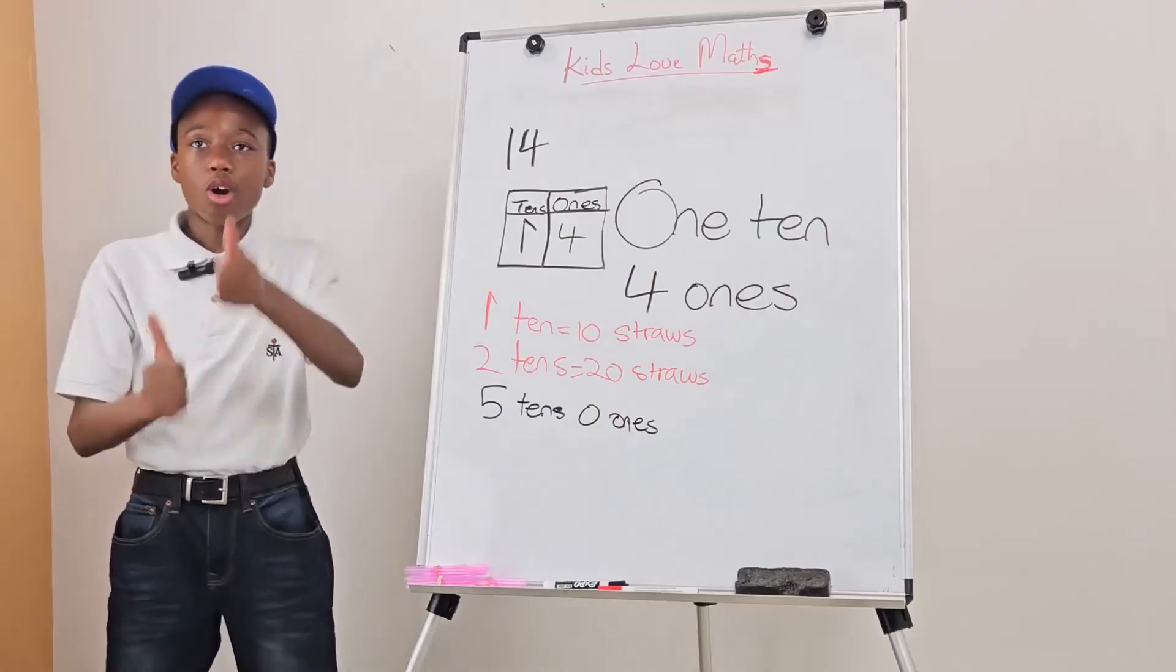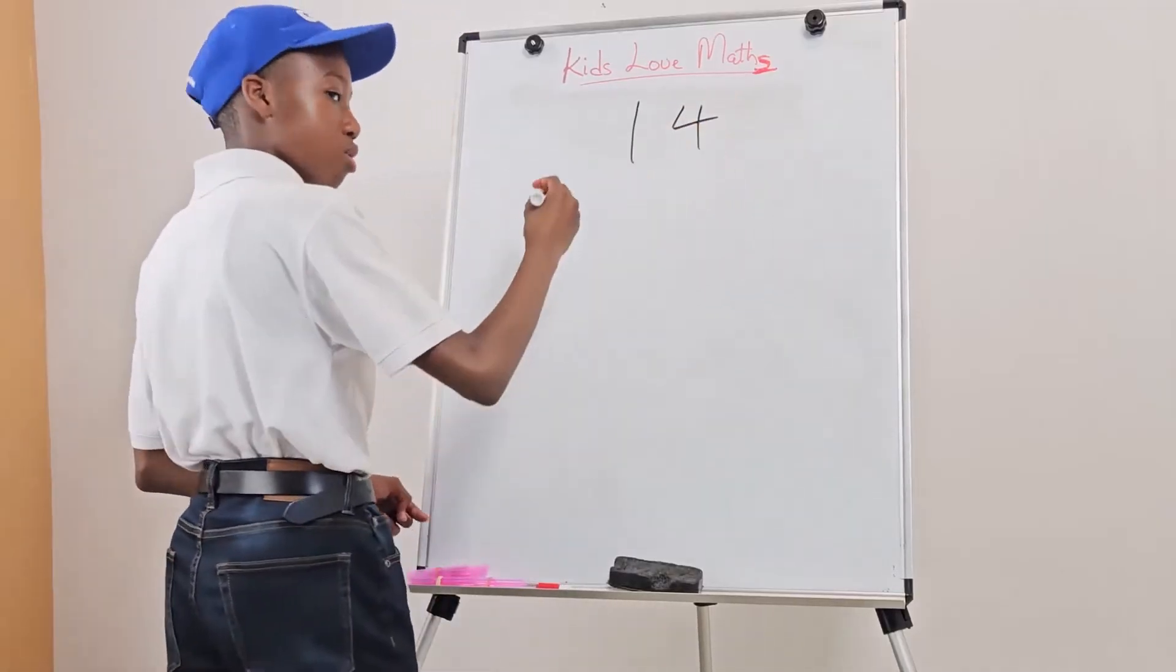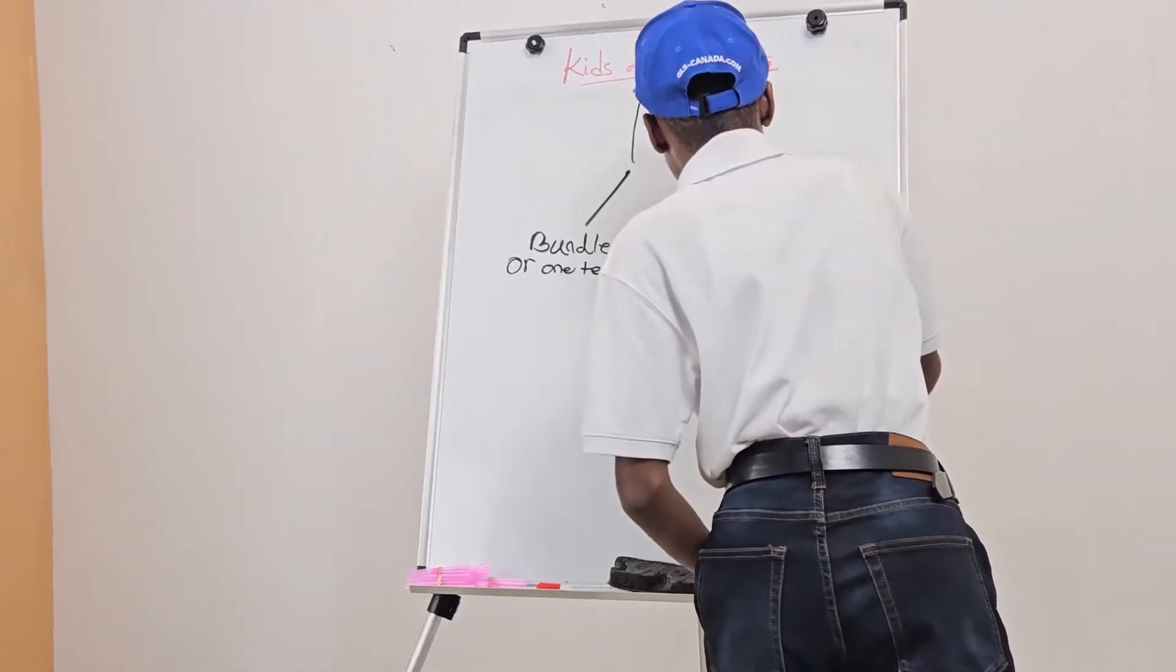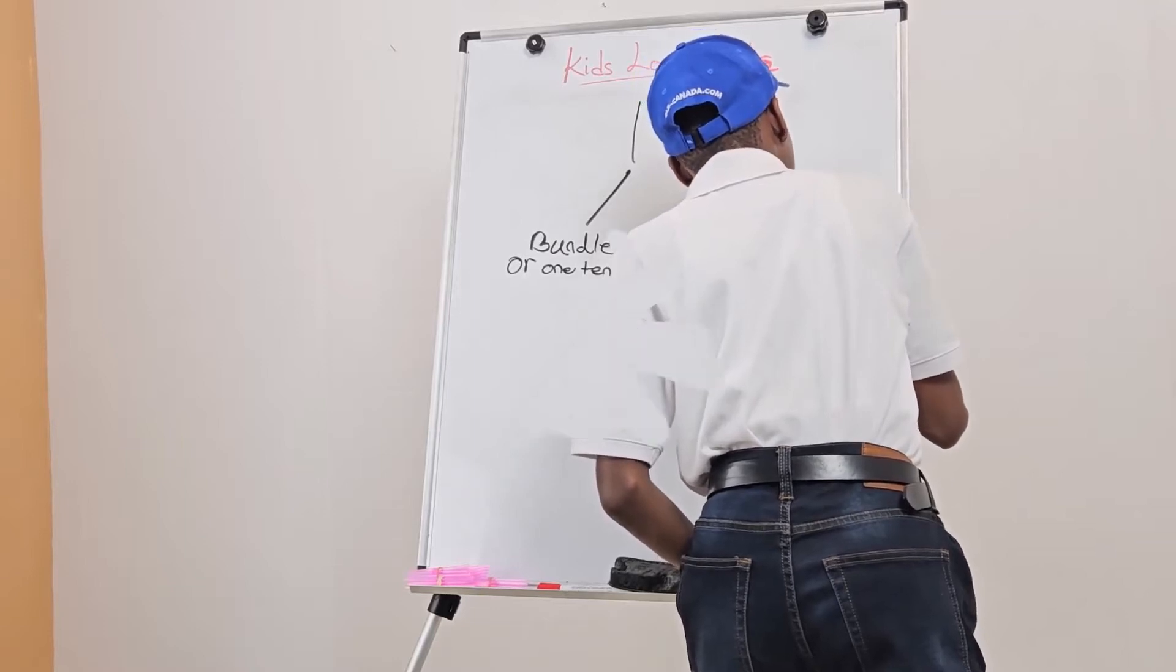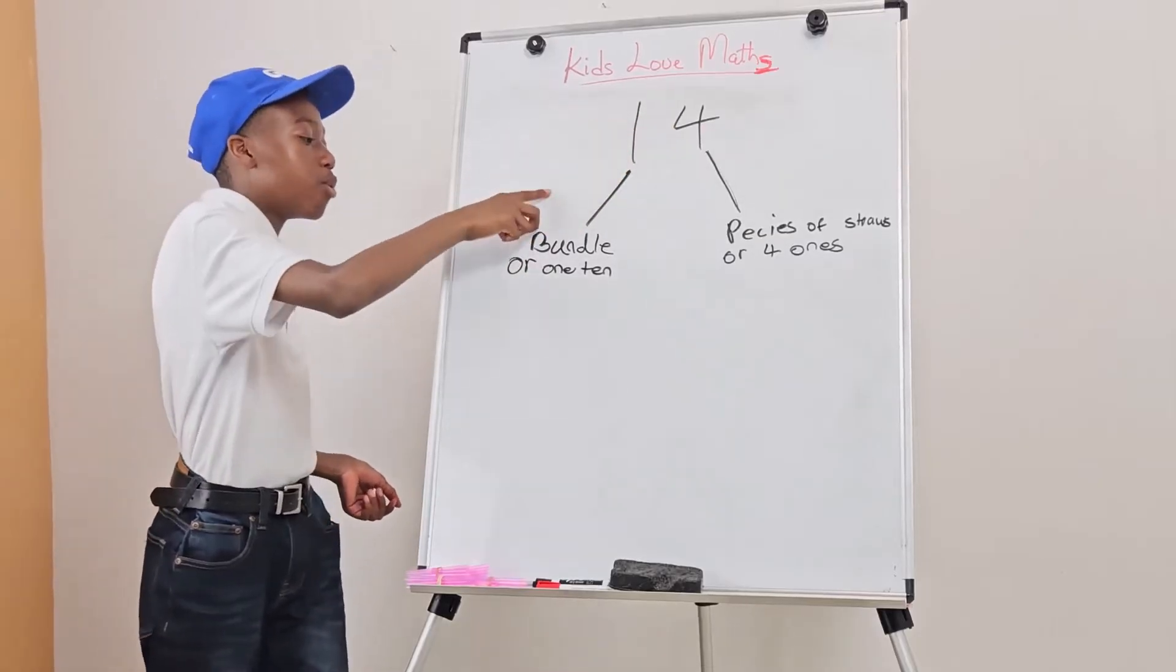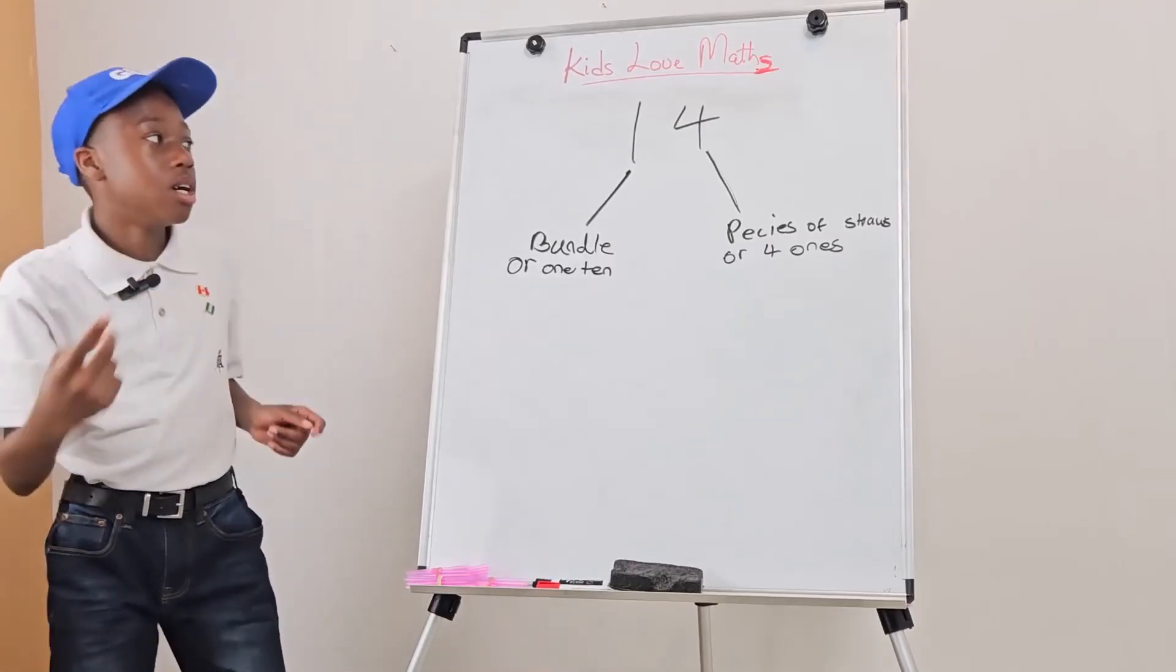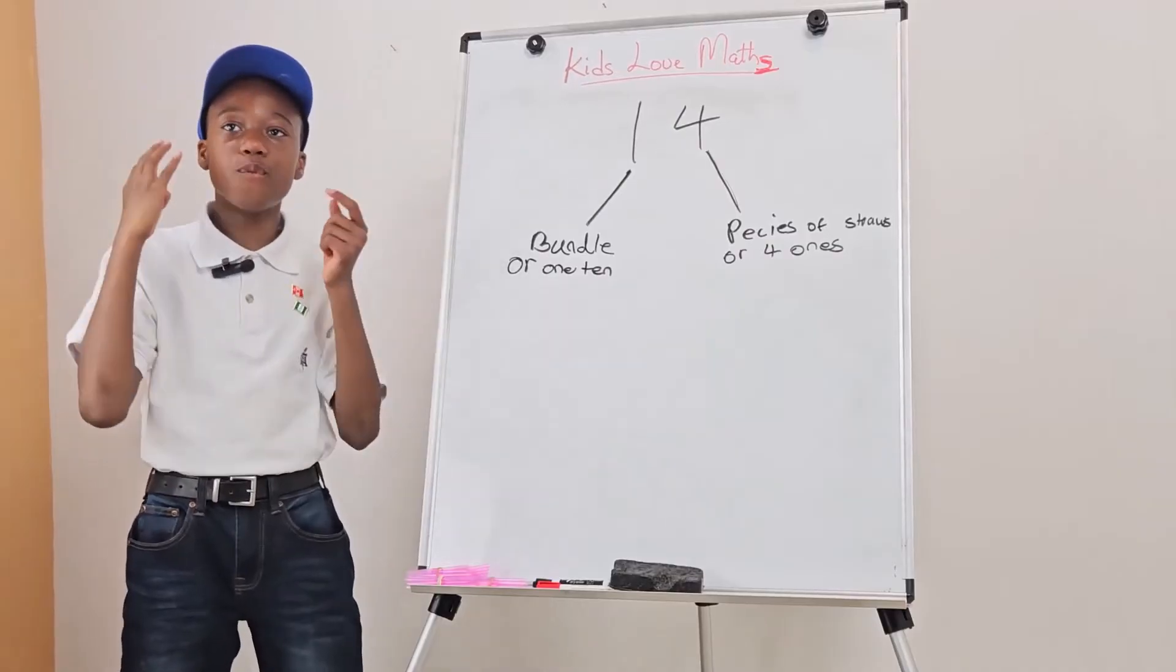Now, going back to the previous question, we can see that 14 is, this would be 1 bundle, or 1 ten, and 4 would be 4 pieces of straws, or 4 ones. You can see that we have 1 in the tens place, and 4 in the ones place. 1 would be 1 bundle, or 1 ten. Because we go up to 9, if we go one more, that is now 10. And we have to regroup 1 to the tens place. Then, we have here 4 pieces of straw, or 4 ones. Because, after we regrouped, we have 4 ones remaining.